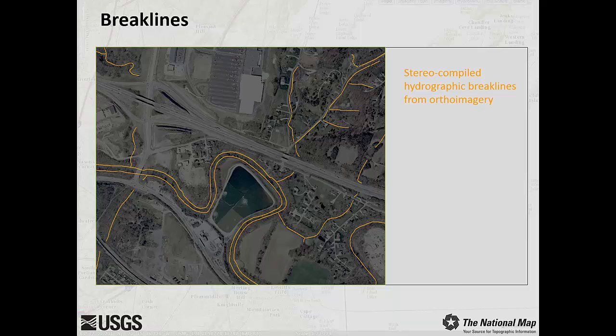Brake lines are usually maintained as 3D features where each vertex has its own X, Y, and Z coordinate values. Some brake lines, such as the bank of a lake or pond, can be represented in 2D with a single elevation attribute, as all the vertices should have the same Z value. But it is generally preferred to maintain all brake lines in 3D.